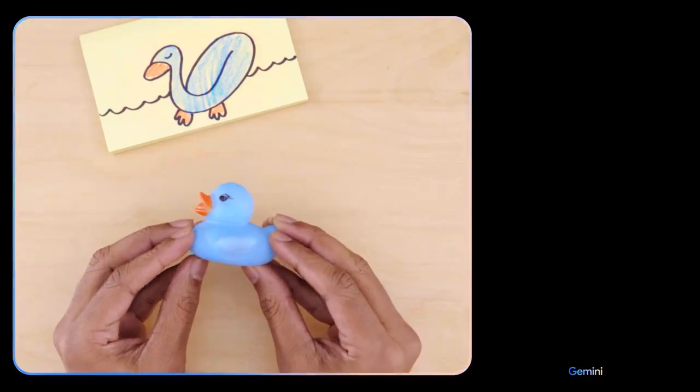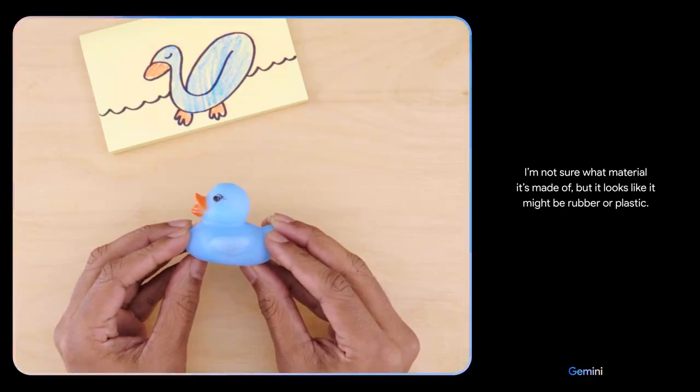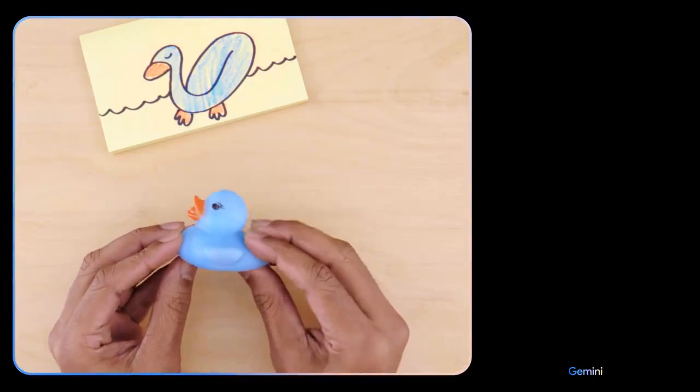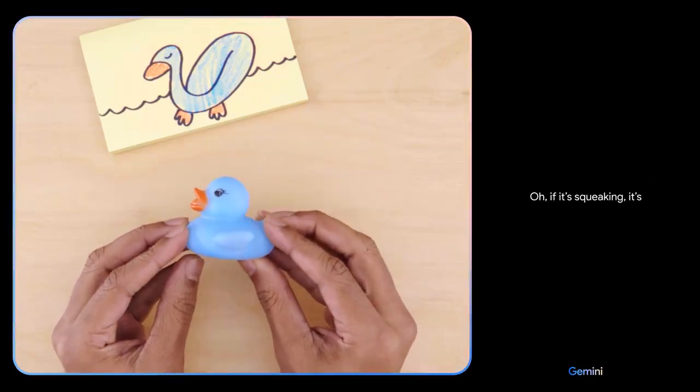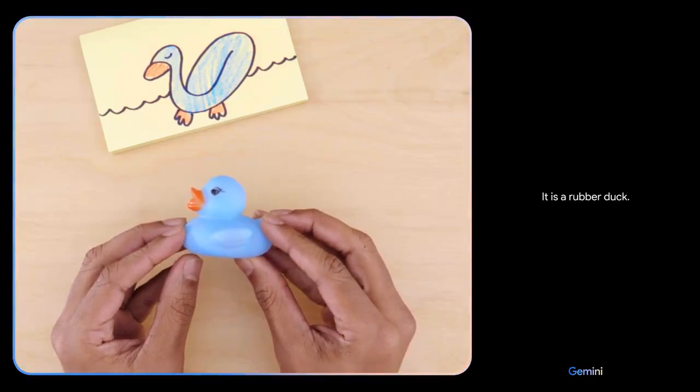Would this float? I'm not sure what material it's made of, but it looks like it might be rubber or plastic. What if I tell you it's making a squeaking sound? Oh, if it's squeaking, it's definitely going to float. Nice. It is a rubber duck. It is made of a material that is less dense than water.